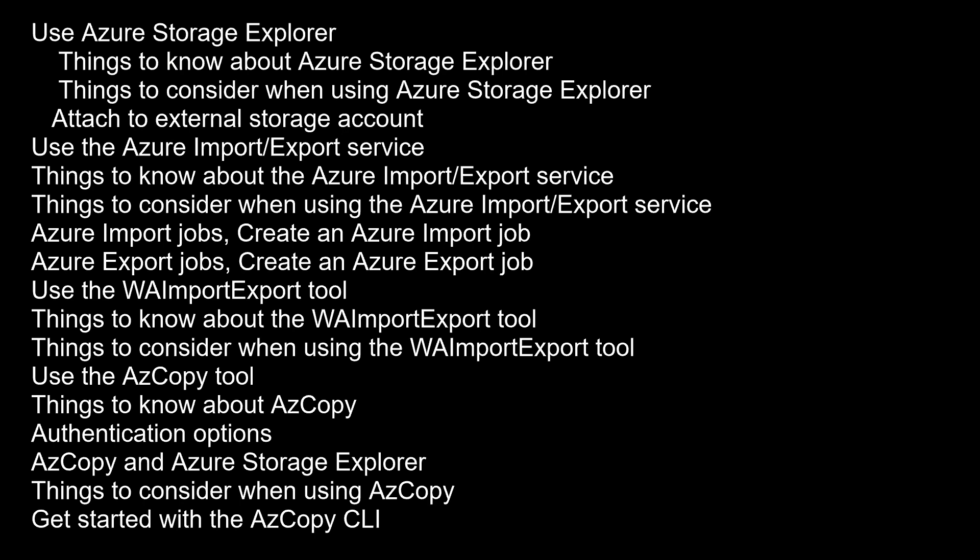Get started with the AzCopy CLI. You access the AzCopy tool by using the CLI in a console or terminal window. The tool offers a simple self-documented syntax. The basic CLI syntax for AzCopy starts with the AzCopy command followed by the type of job to perform, such as copy. For the copy command, you specify the path of the files to copy, the path for the copied files, and any options to apply to the transfer job.